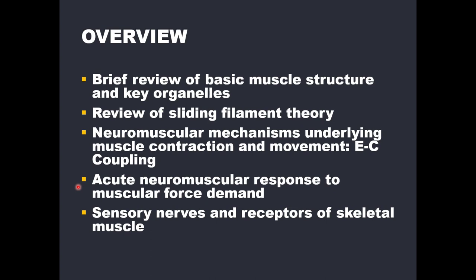Up to this point in the lecture series, we are only talking about communication from the nervous system to the muscle to produce a contraction. This direction of communication is referred to as efferent — E-F-F-E-R-E-N-T. So signals going from the central nervous system, the CNS, to the muscle — such as during a contraction — are called efferent signals.